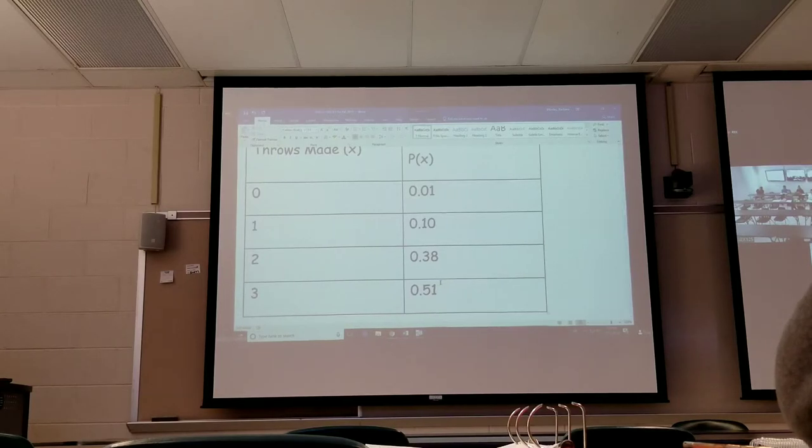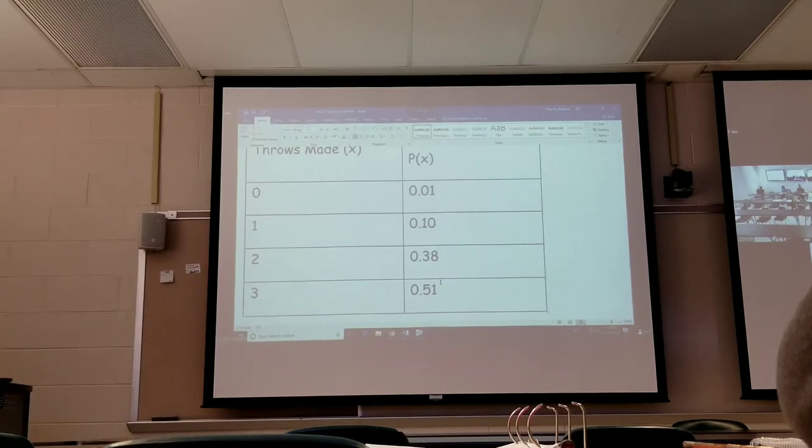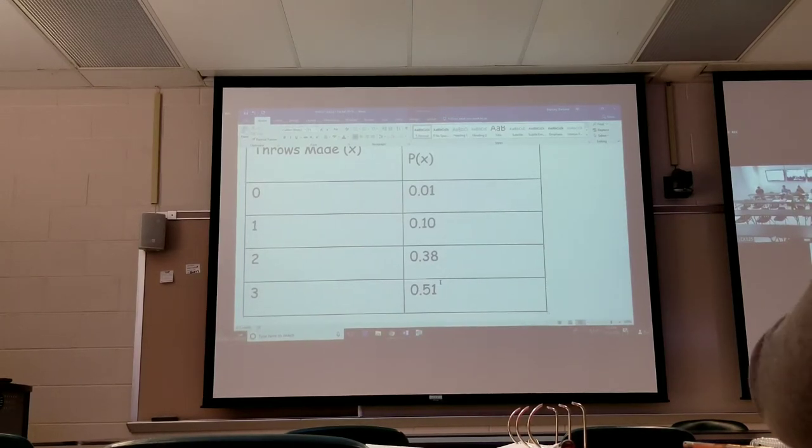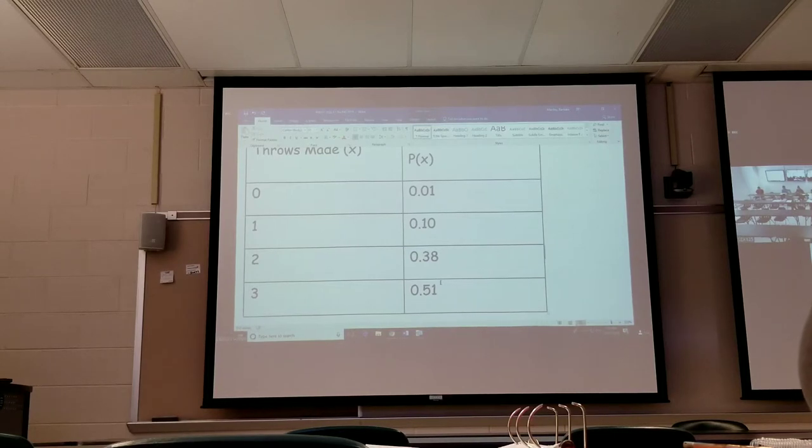Now, if I were betting on this person, and I don't because I know better, you're not supposed to win with probability. Those games are designed so you don't win. So the probability for this free throw player, if they go to the line and shoot three throws in a row, I'm going to guess they'll make all three because that's their highest probability. Yeah, they're probably going to make all three.